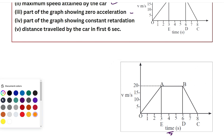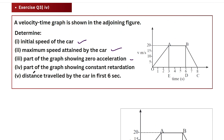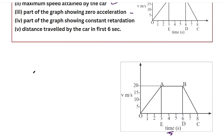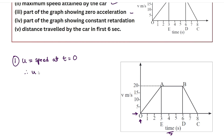Let's start with the first quantity we need to identify: the initial speed of the car. By definition, initial speed means speed at time equals zero — that is, at the start of our motion. At time zero, the point on the graph shows that velocity registered is also zero, so the initial speed for this example is zero meters per second.